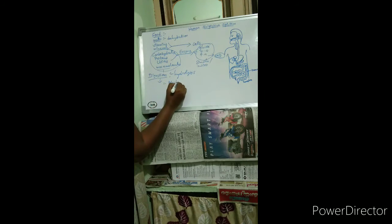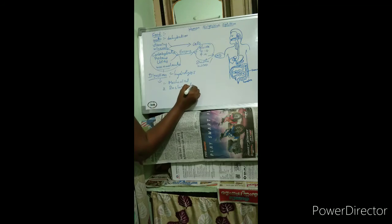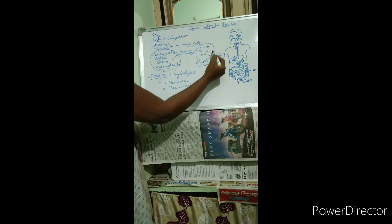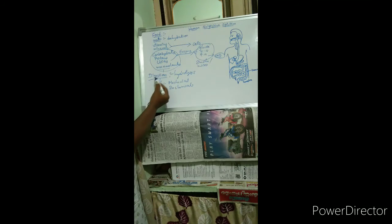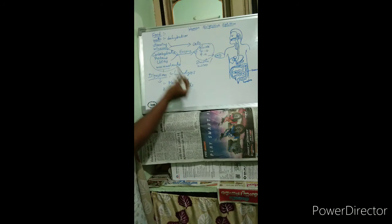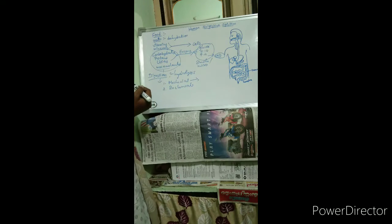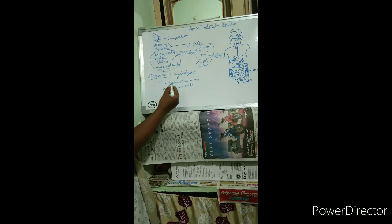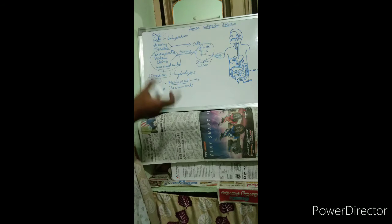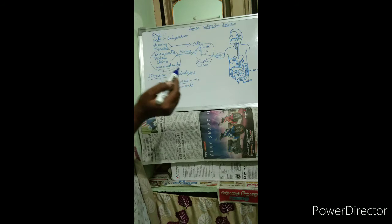Digestion mainly consists of two types of processes. One is called the mechanical process and the second is called the biochemical process. The mechanical process means chewing of food materials with the help of teeth and mixing of food materials with the help of the tongue. That is called the mechanical process, also called mastication.